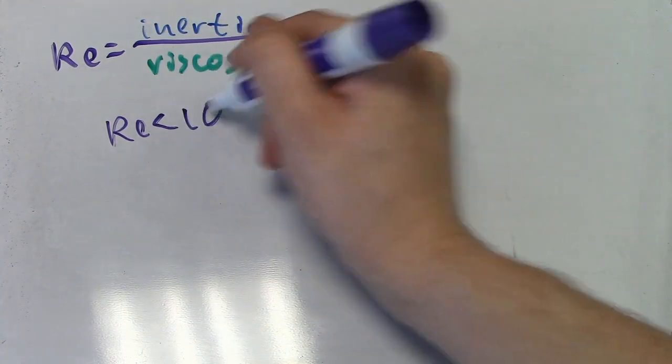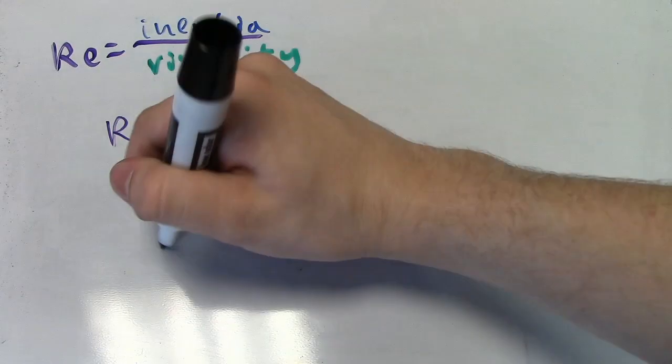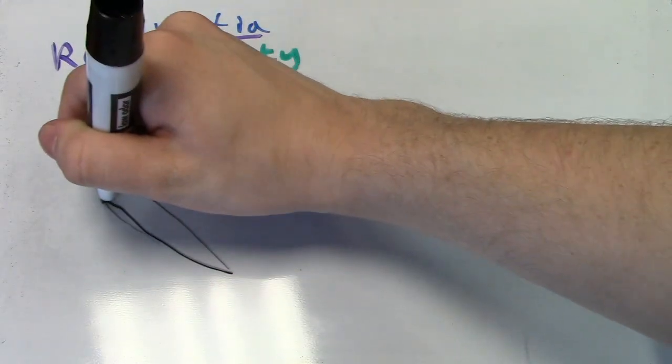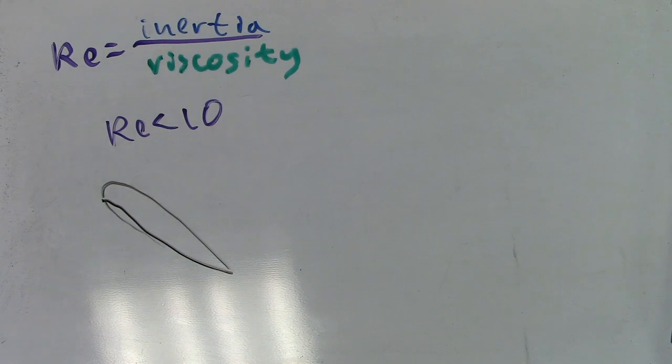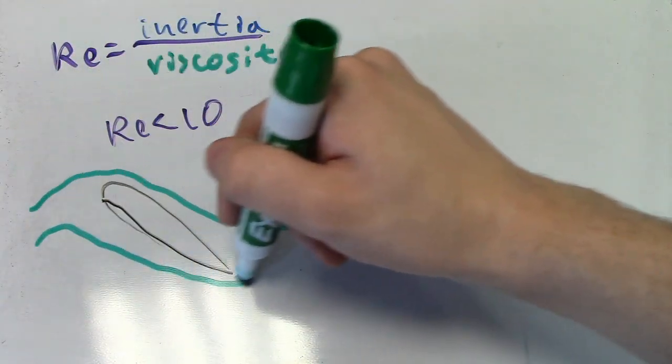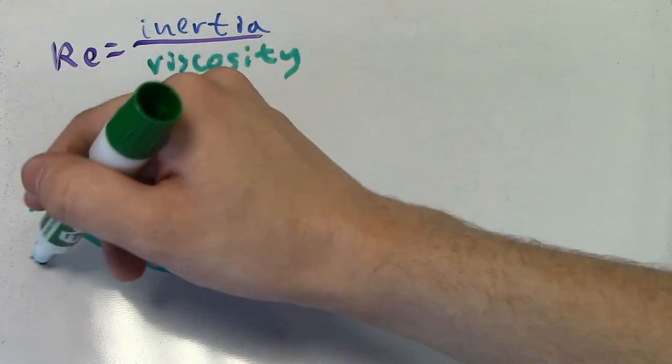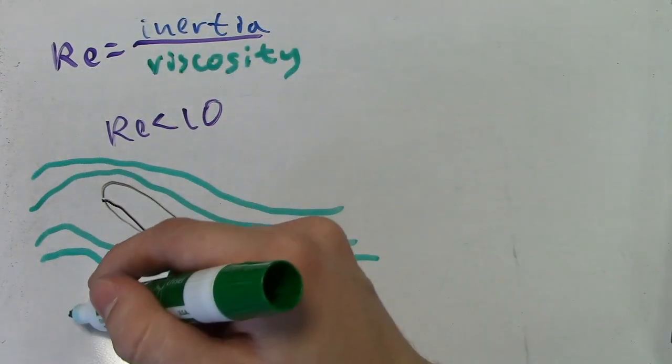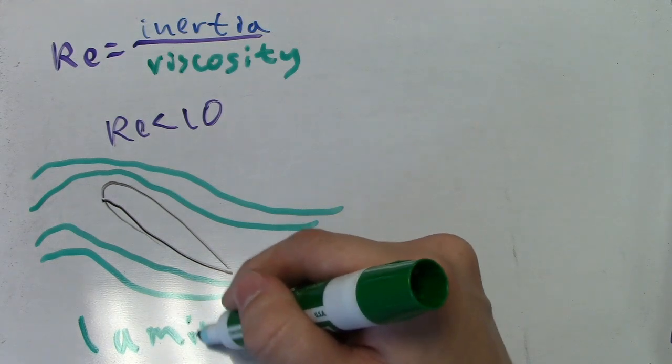Reynolds number is the inertial forces divided by the viscous forces. This measures how big the inertial forces are compared to the viscous ones. As such, at low Reynolds number, viscous forces dominate, and the air sticks to the surface of the wing. This is termed laminar flow.